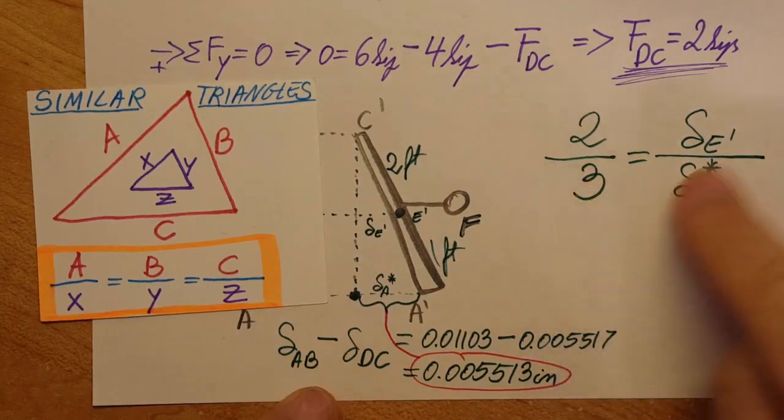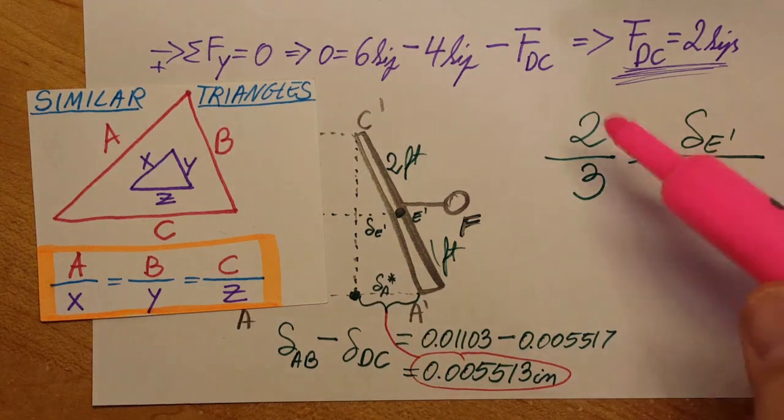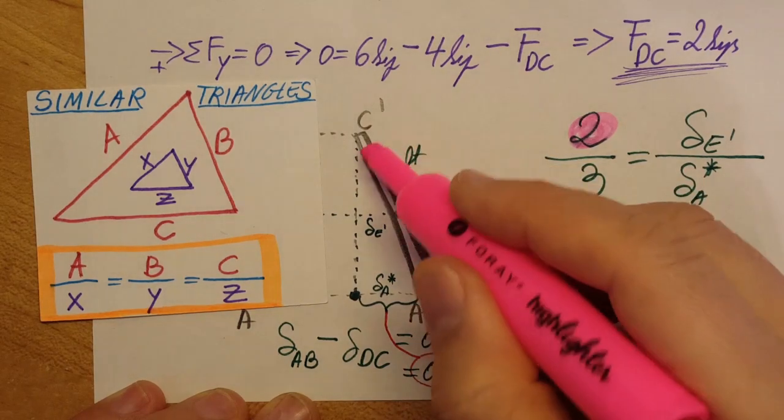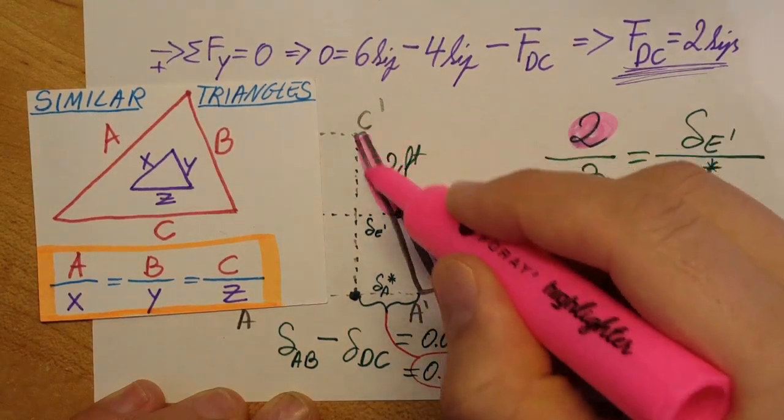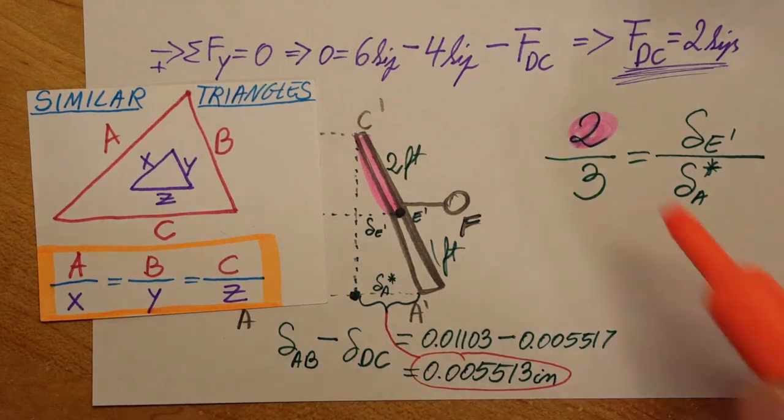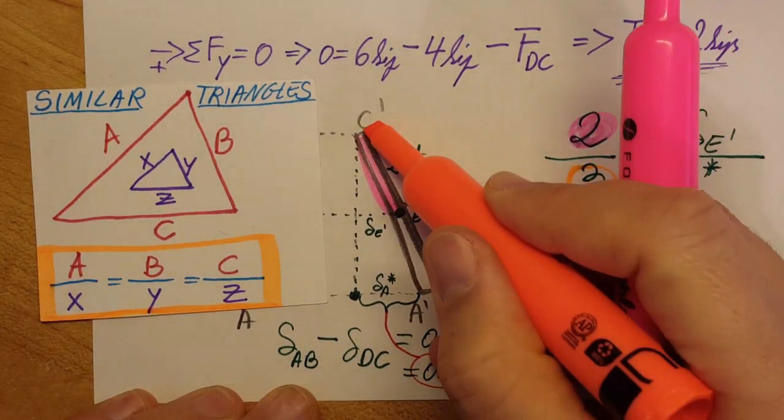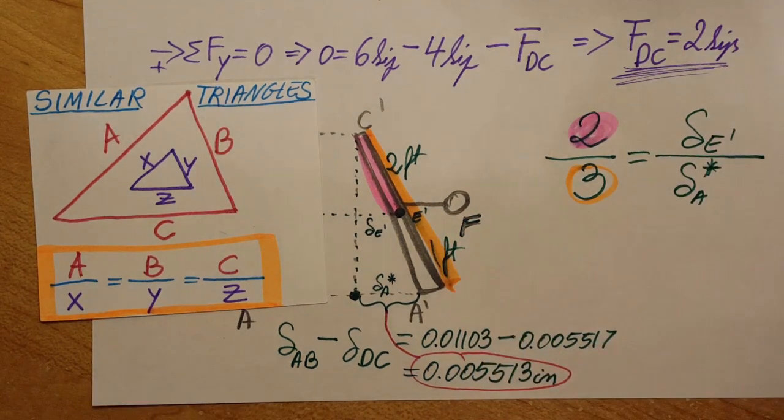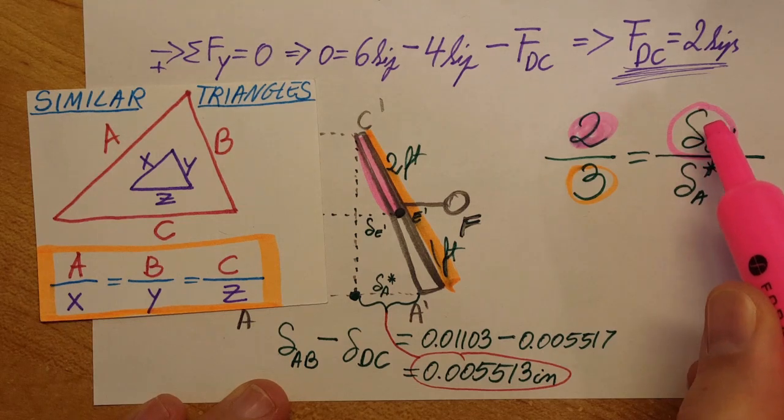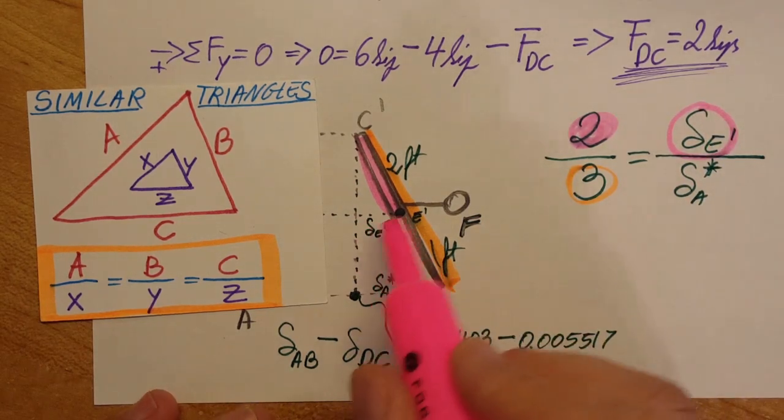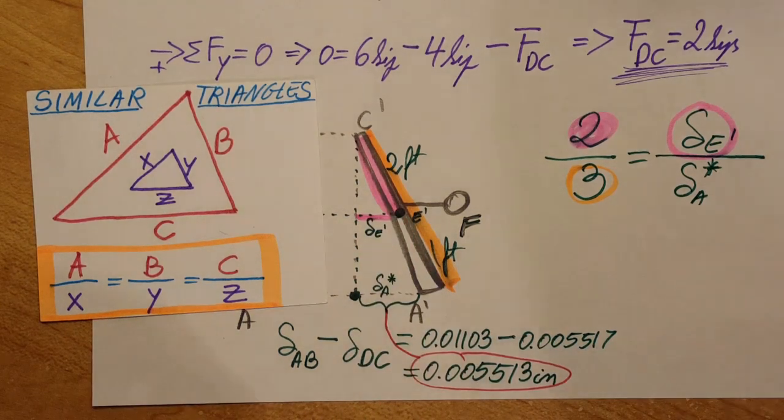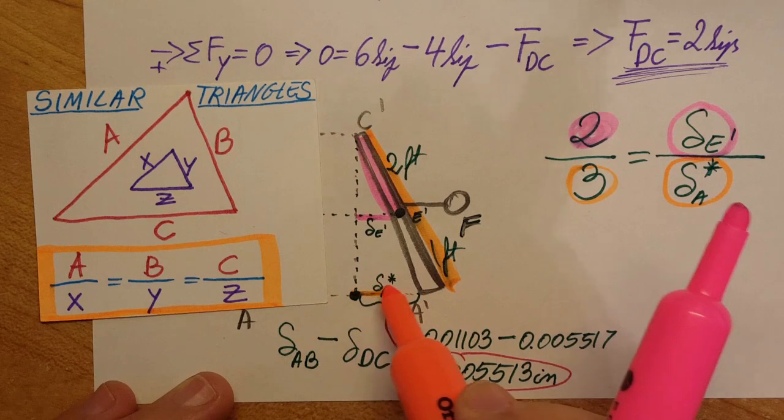We're gonna work with this triangle right here, this will be our large triangle, and this triangle up here will be our small triangle. Here it is, I wrote up the similar triangle rule. The small triangle side two over the big triangle side, same thing here, the small triangle side which I marked as delta E prime.